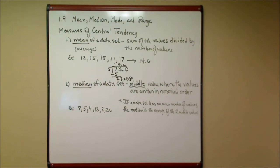That's the one you should be most familiar with. The median of a data set, you know what the median of a road is, that's that raised concrete section in the middle of the road, is the middle value where the values are written in numerical order. Now, numerical order means if you take the numbers in the data set, and you put them in least to greatest or greatest to least.